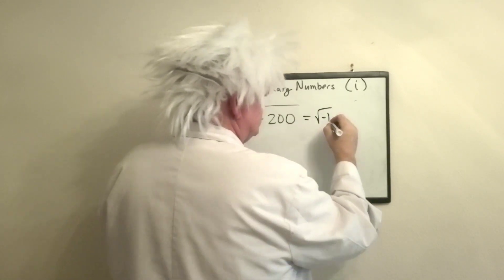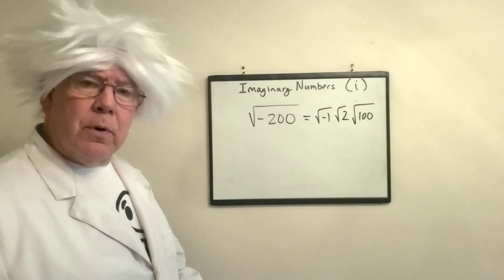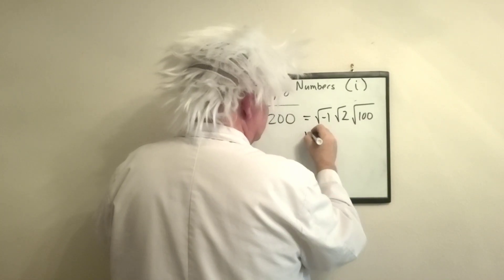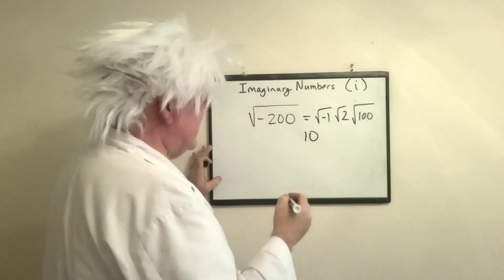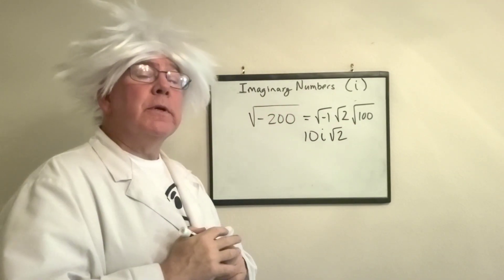When I divide two out, lo and behold, I get the square root of 100. Now remember, number, letter, radical. Square root of 100 is 10. Square root of negative 1 is i. Square root of 2.